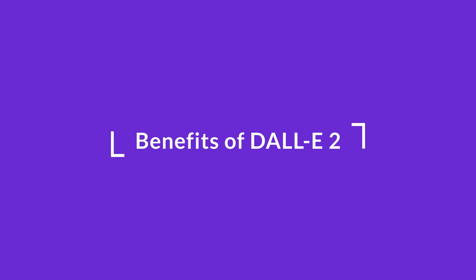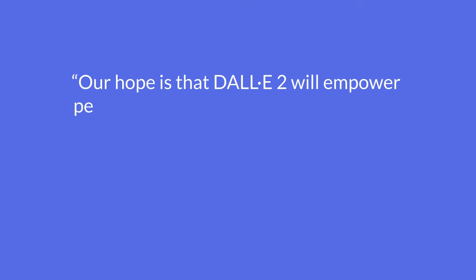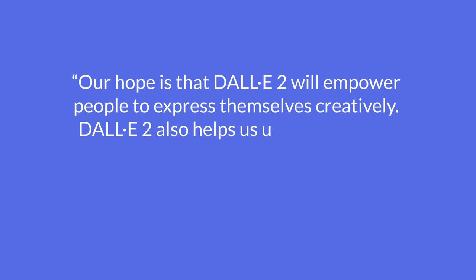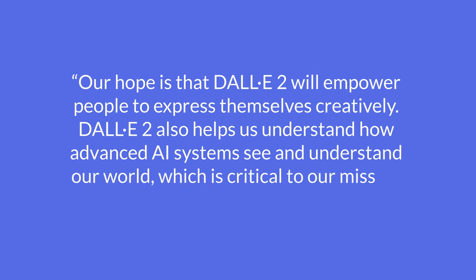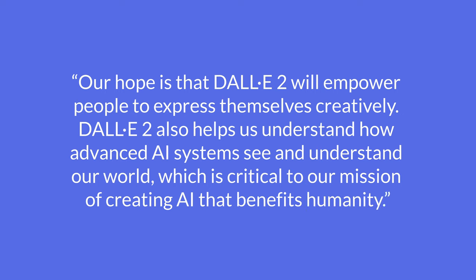DALL-E 2 is an amazing and creative model, but it is fair to ask what the benefit of a model like this is. OpenAI explains their goal: 'Our hope is that DALL-E 2 will empower people to express themselves creatively. DALL-E 2 also helps us understand how advanced AI systems see and understand our world, which is critical to our mission of creating AI that benefits humanity.' It is one of the only bridges between image and text understanding, and it can even help us understand how brains and creative processes work. Do you know what DALL-E 2 is named after? Leave your guess in the comments.